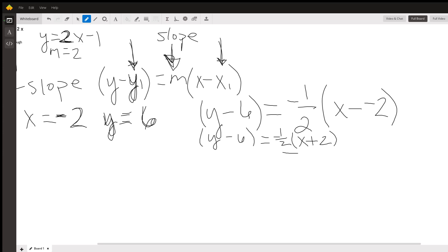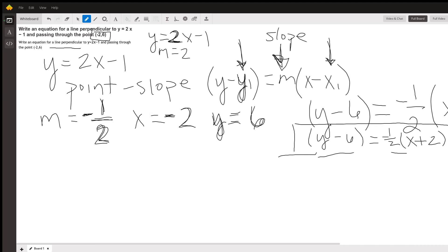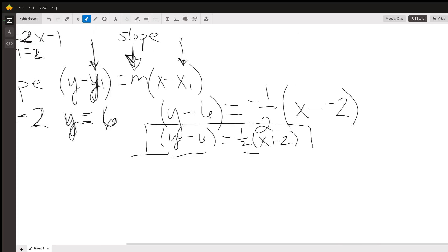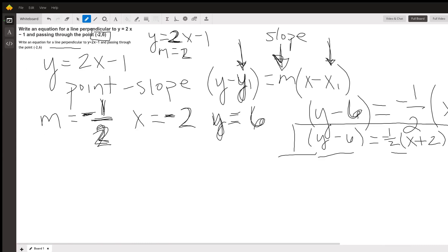I would much rather write x plus 2. So there is the equation of a line written in point-slope form that has a perpendicular slope to the given line, which was 2, perpendicular slope being negative one-half, and it goes through the point (-2, 6) by using it into the point-slope formula. I hope you liked my explanation of this question. Thank you so much for watching.